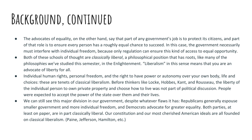We can still see this push and pull in Republicans and Democrats today. Democrats generally advocate for greater equality, while Republicans generally want smaller government and more individual freedom. Our Constitution and American ideals all come from the ideals of classical liberalism, where people have the right to decide how they want to live. Paine, Jefferson, and Hamilton are the figures who codified or first wrote down the tenets of classical liberalism.